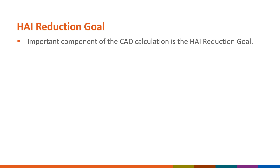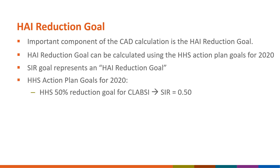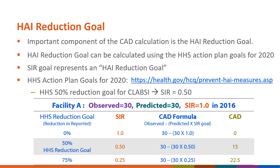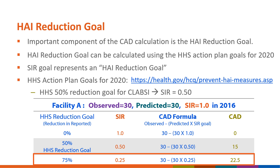An important component of the CAD calculation is the HAI reduction goal, which can be calculated using the HHS Action Plan Goals for 2020 or a customized SIR goal. The HHS goal for 2020 can be found at the HHS website for national targets and metrics. As the SIR goal becomes lower, the CAD — the number of infections the facility needs to prevent — increases. For example, an SIR goal of 0.50 correlates to a CAD of 15, and if the SIR goal is decreased to 0.25, the CAD becomes 22.